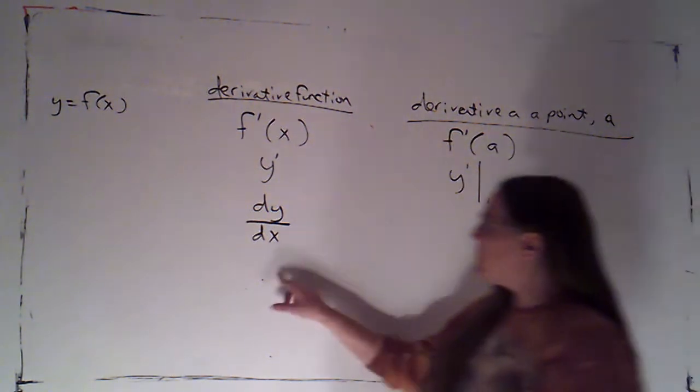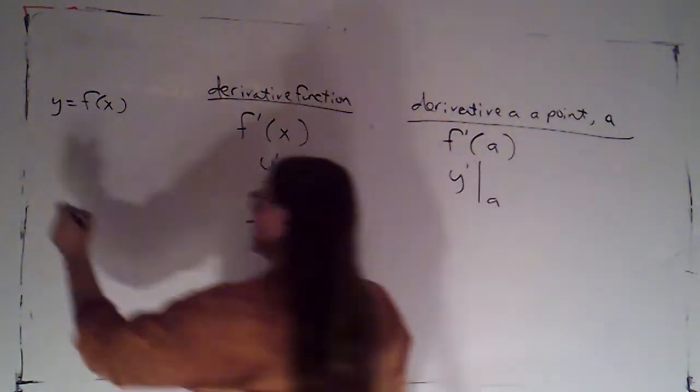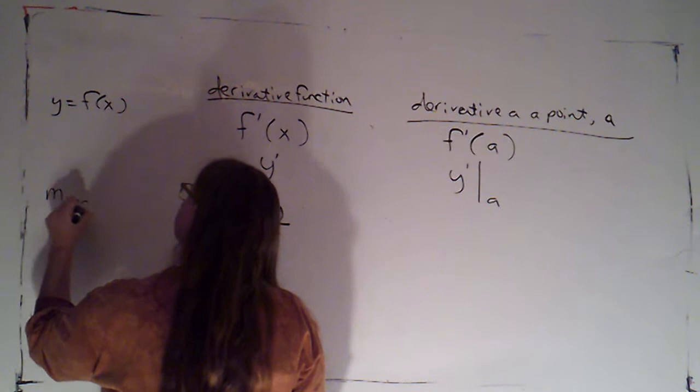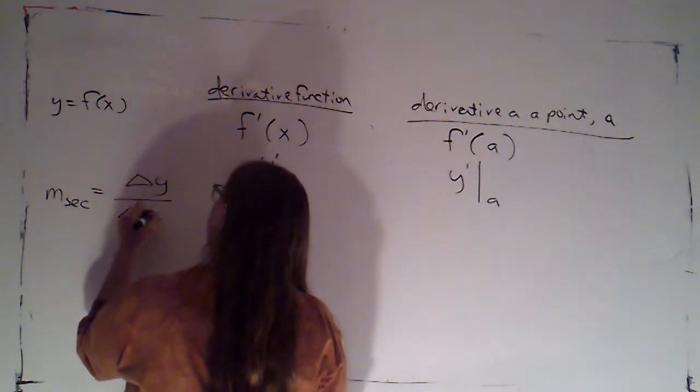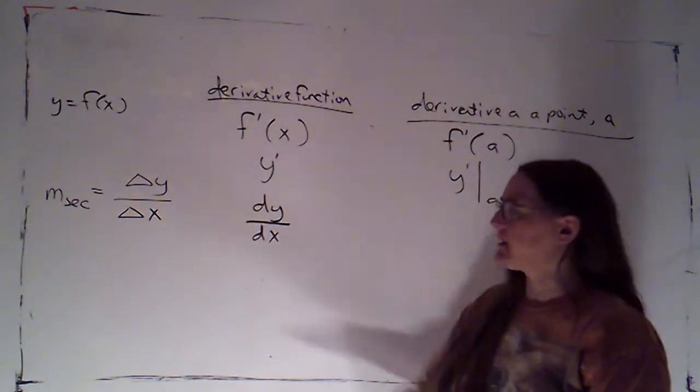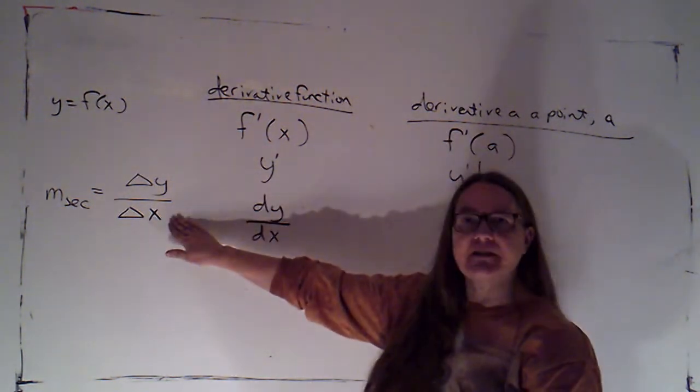So if we think about it, when we have the slope of a secant line, that's the change in y over the change in x. That's delta y over delta x.